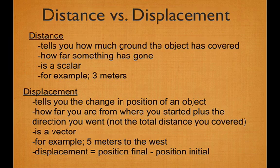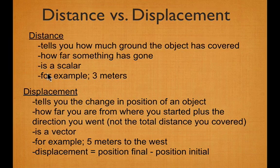The technical definition for distance, if there is one, is how much ground an object has covered — or simply how far something has gone. Distance is a scalar: no direction, all it is is a magnitude. In this example we have 3 meters.